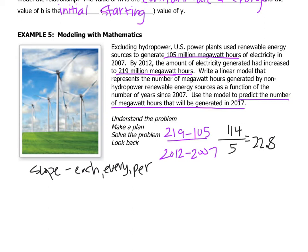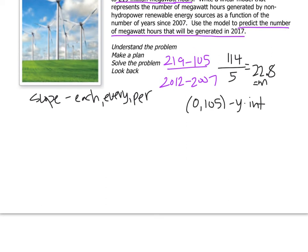So let's keep going. We have to find the intercept. And now remember, the intercept is the starting value. So it tells us that it starts at 105. So that is actually the intercept, 105. So I have the slope. That's 22.8. And I have the intercept. So now I can just put it all together in a formula. So y equals 22.8x plus 105 is the model that's going to represent this situation.